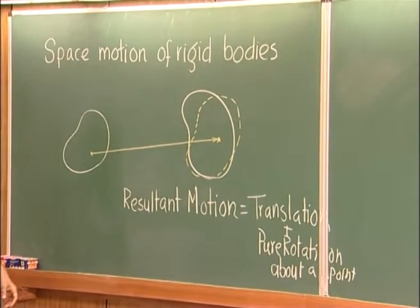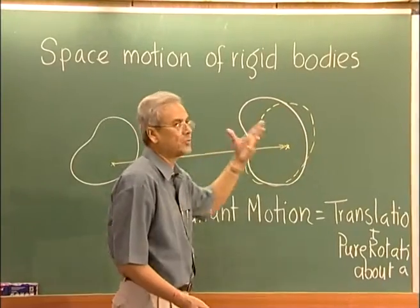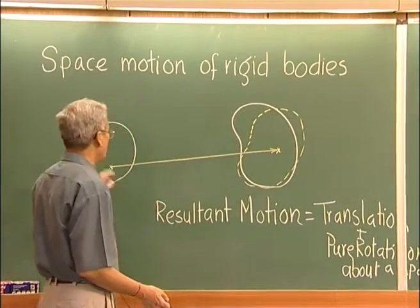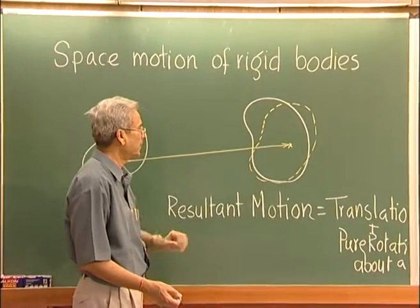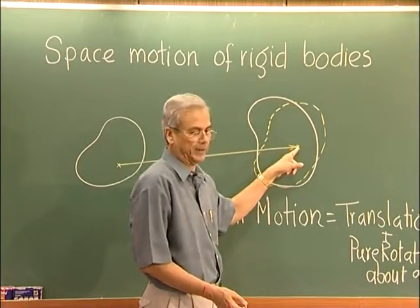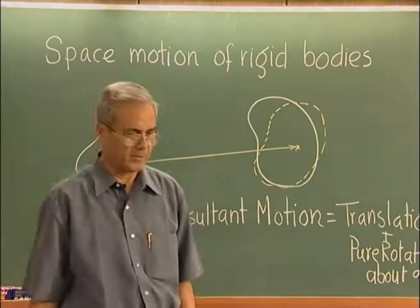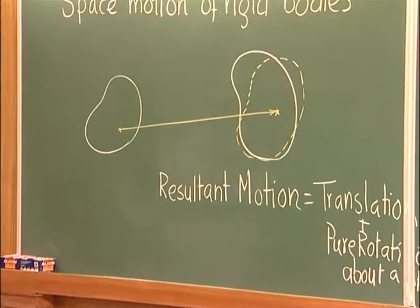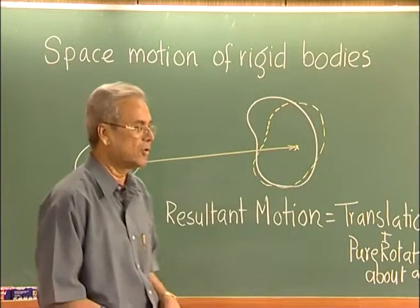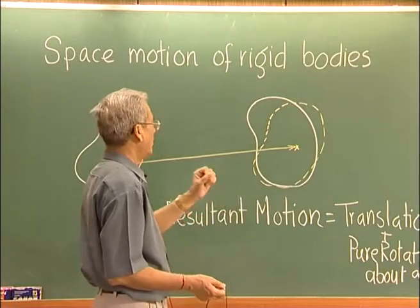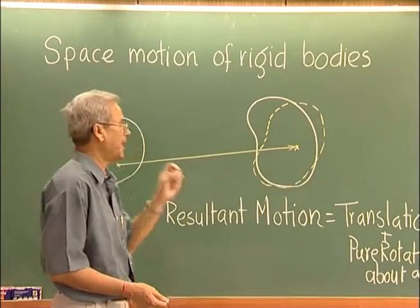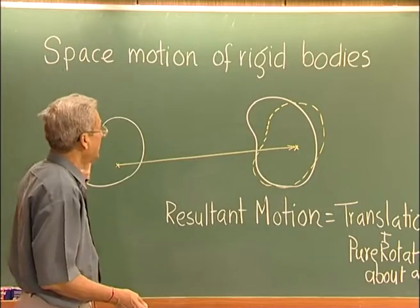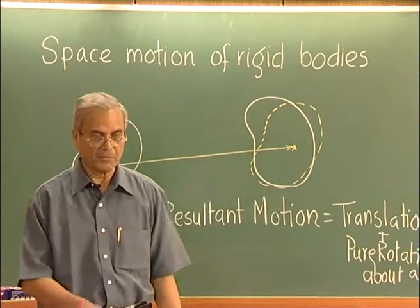Therefore, it is clear that we should investigate the motion of a rigid body by splitting it into two components: one which is a pure translation of the body, and then a rotation of the body about that point. Translation of a body is a very simple situation — each and every particle executes identical motion, so the dynamics is very simple. We can treat the whole object as a particle motion concentrated at a point, identical to the case of particle motion.